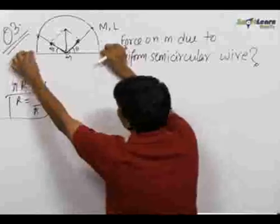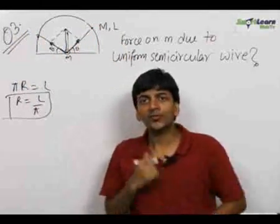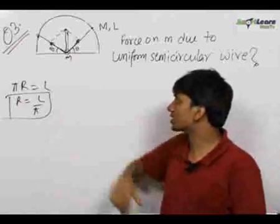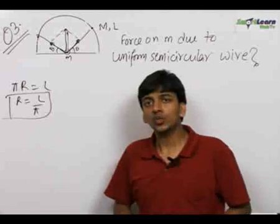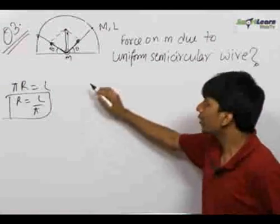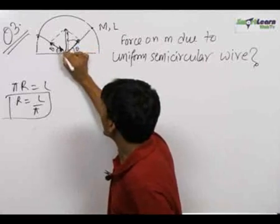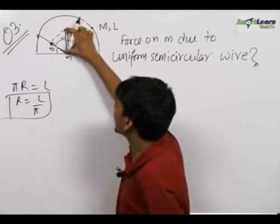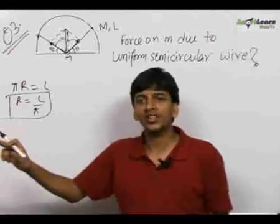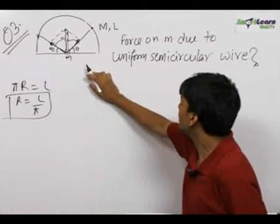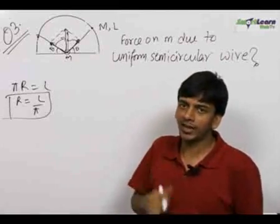Similarly, for each pair of small particles the resultant will come in the vertical direction. So the final resultant force acting on this small mass m due to the uniform semicircular wire is in the vertically upward direction. What we need to do now is integrate the y-component of the forces. Taking the y-component of each pair and adding them up gives the final resultant force acting on mass m due to the uniform semicircular wire, in the upward direction.